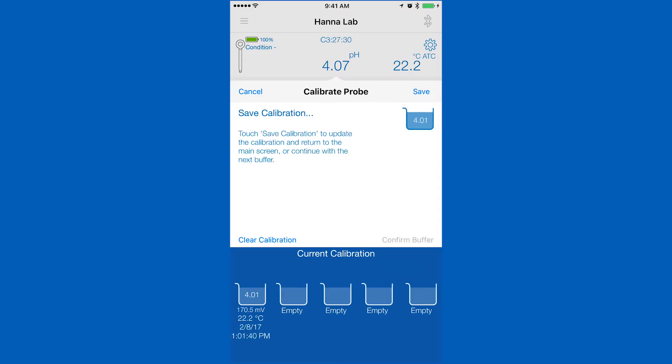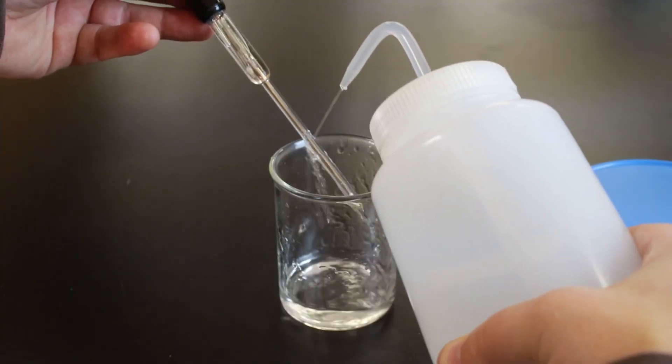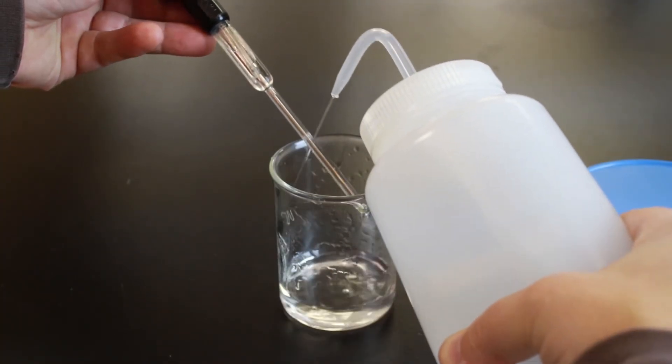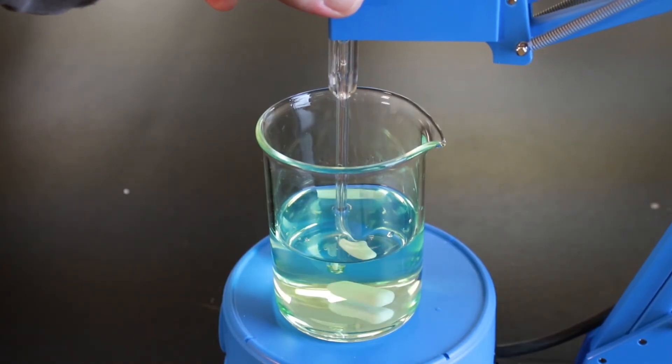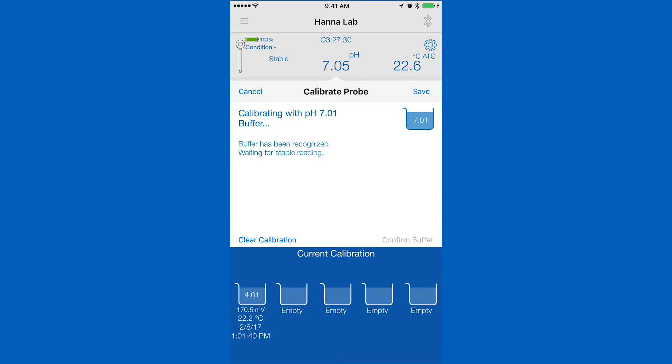To calibrate the next point, first we recommend that you rinse your electrode with deionized water to prevent contamination. Place in the next buffer and your saved calibration will be stored and our app will begin calibrating your next point.